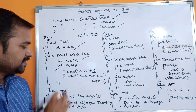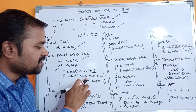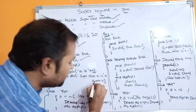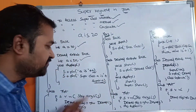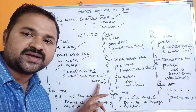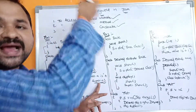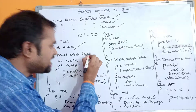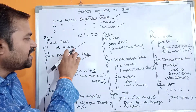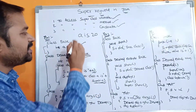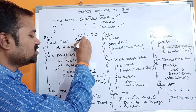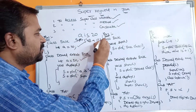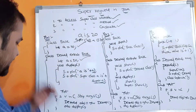The next statement is: System.out.println("super class a is " + super.a). With the help of the super keyword we can access the super class variable. The super class of the derived class is the base class, and in the base class a is 10, so 10 will be printed. The output will be "super class a is 10".